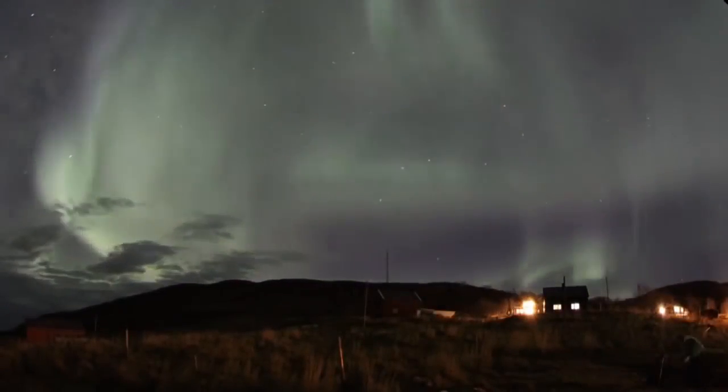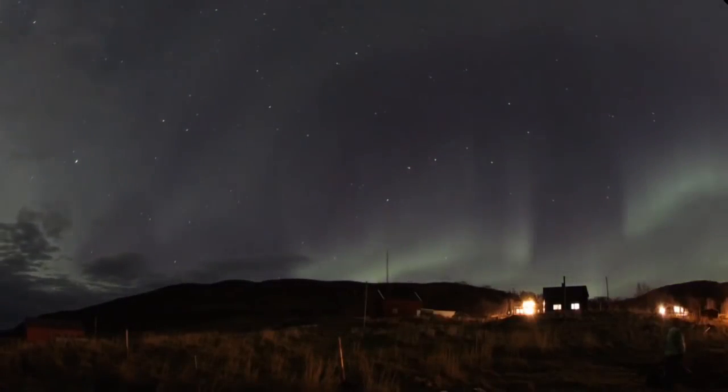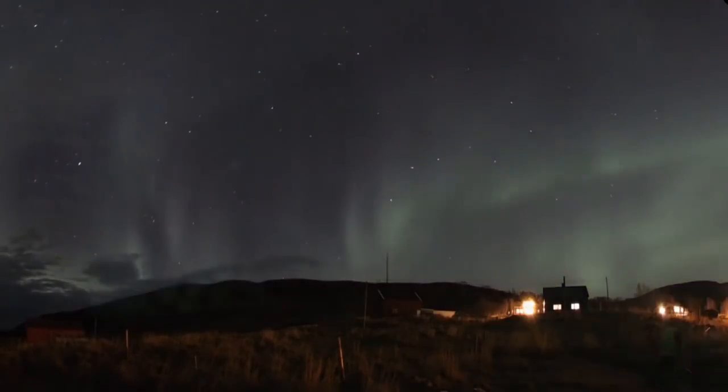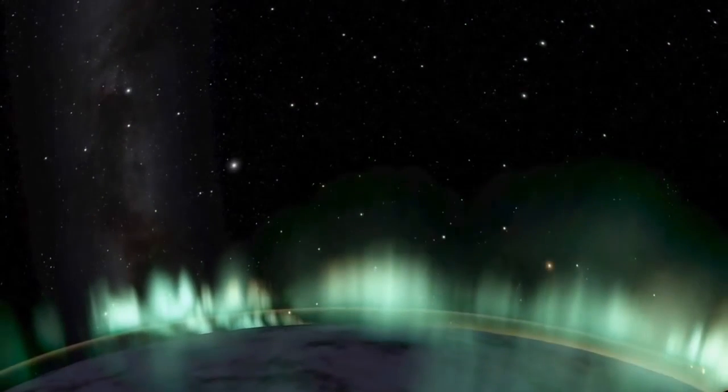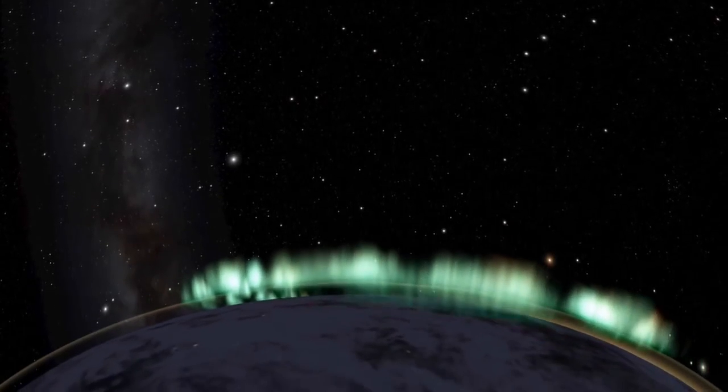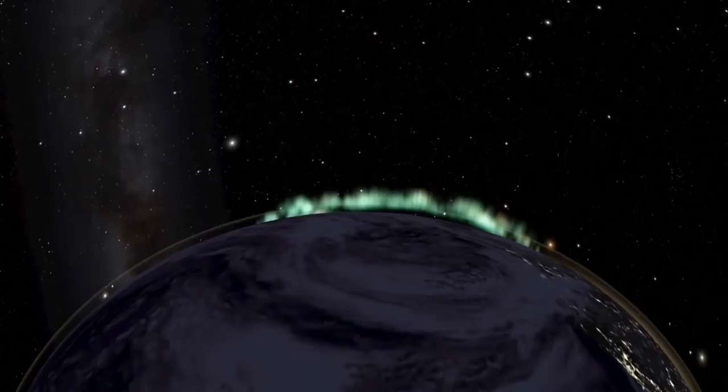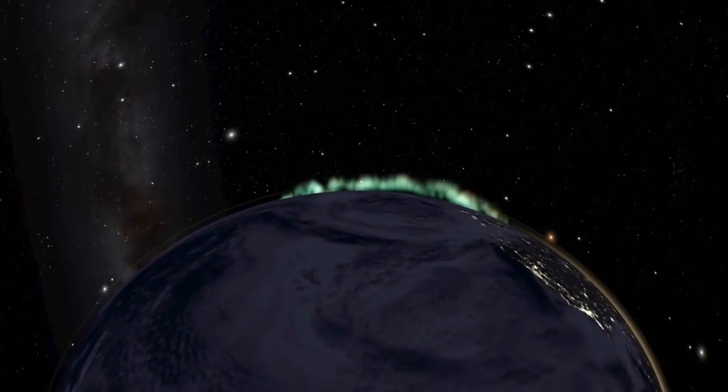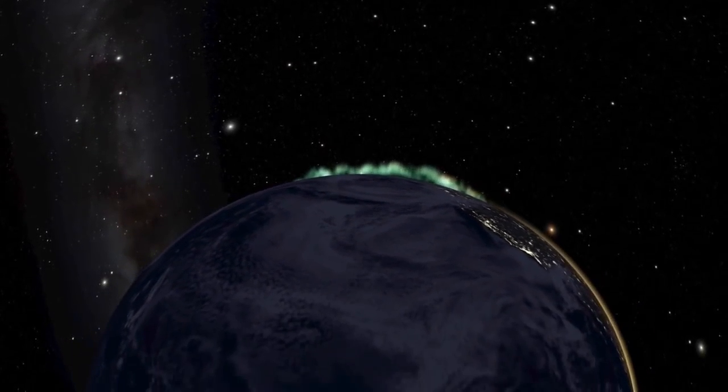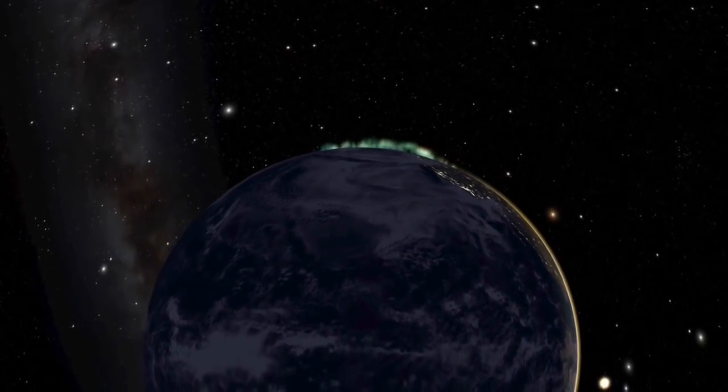Auroras crown our home world. They promise that our magnetic field still shields us from deadly solar storms, as well as cosmic rays from far away supernovas. Within our protective cocoon, life has flourished, evolving into more complex forms, and finally giving rise to sentient beings, aware of the magnetosphere which surrounds and protects the life-bearing earth below.